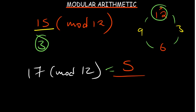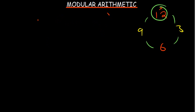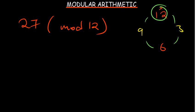What about a larger number like 27 mod 12? You rotate twice to reach 24, then from 24 to 27 you count 3 more steps. So the answer is 3. You forget about the number of full rotations and just look at what remains — that's what modular arithmetic means.